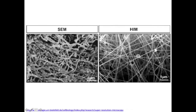Another comparison illustrates the advantage of imaging non-conductive materials. In the SEM image on the left, the fibers had to be coated and the morphology is somewhat destroyed — you can tell they're fibers but they don't represent the true morphology. On the right, the helium ion micrograph shows the pristine, original form of those fibers.